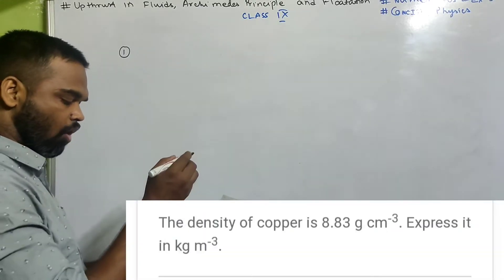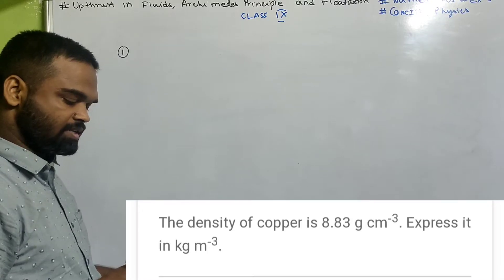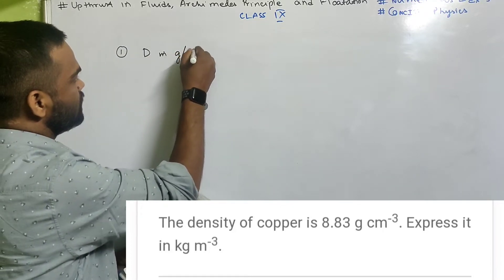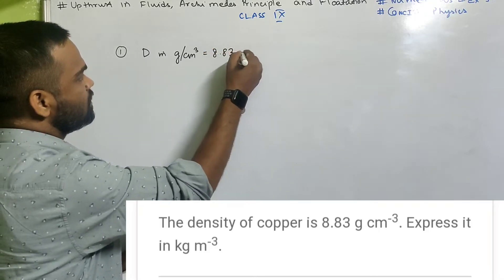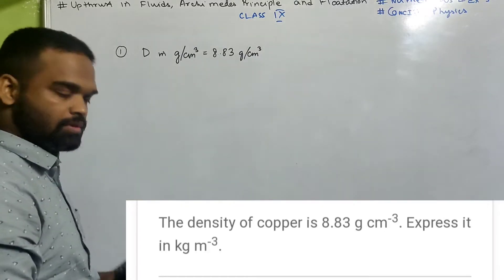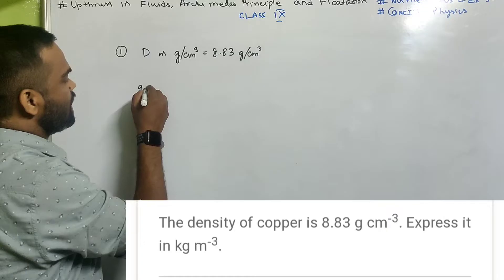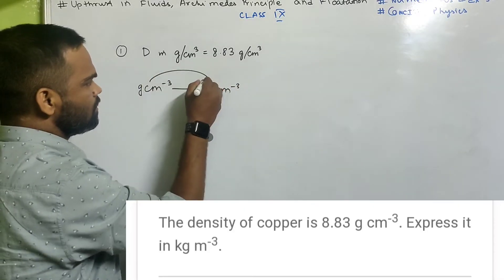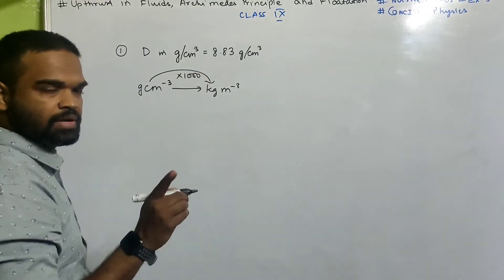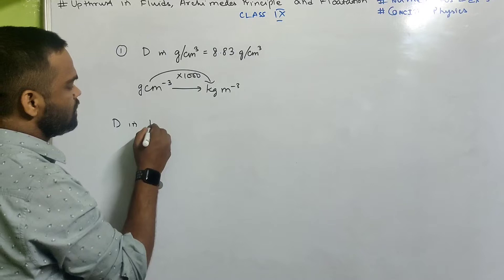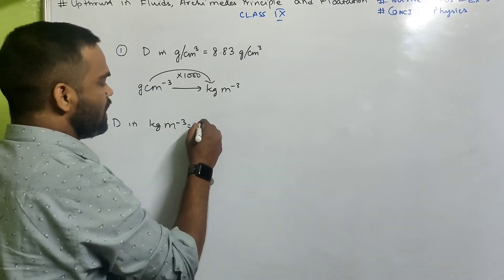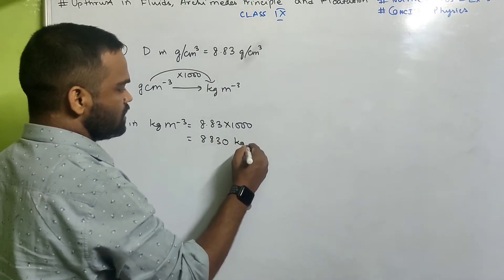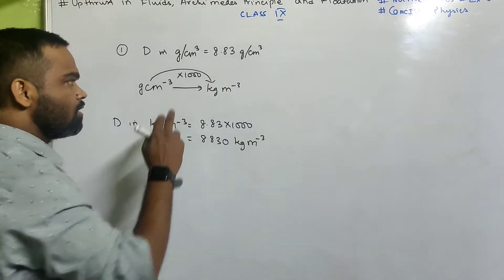The first one: the density of copper is 8.83 gram per centimeter cube. Express it in kg per meter cube. So density in gram per centimeter cube is given as 8.83 g/cm³. You need to convert it to kg per meter cube. From g/cm³ to kg/m³, you multiply by thousand. So density in kg per meter cube will be 8.83 multiplied by 1000, which is 8830 kg per meter cube.